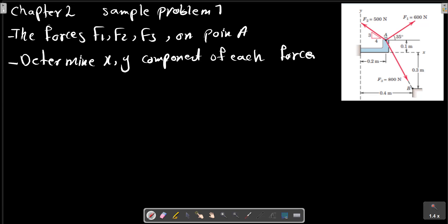Chapter 2 Sample Problem 1. The forces F1, F2, and F3, all of which act on point A of the bracket as shown in the picture, are specified in three different ways. Determine the X and Y scalar components of each of the three forces.